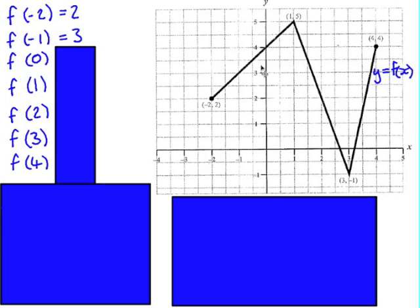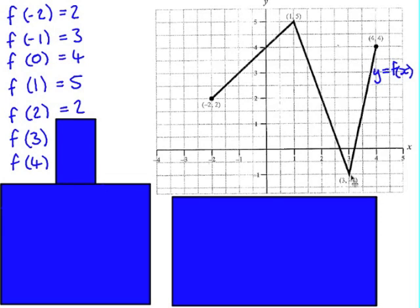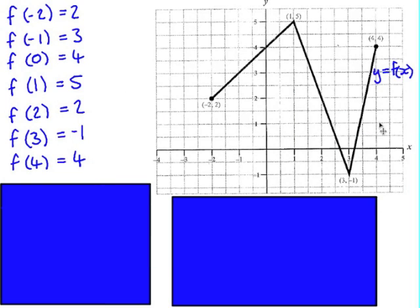An input value of 0 gives an output of 4. An input of 1 gives an output of 5. An input of 2 gives an output of 2. An input of 3 gives an output of negative 1. And an input of 4 gives an output of 4. So even though this is not a recognisable function, we can still use this terminology — we have pairs of input and output values.